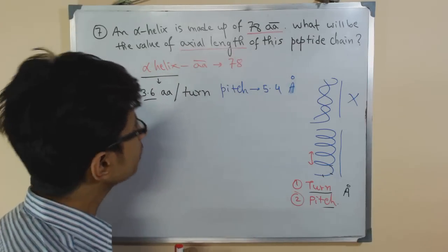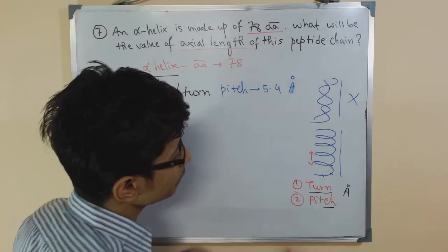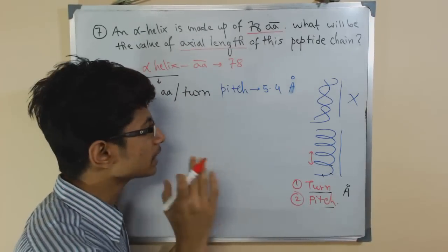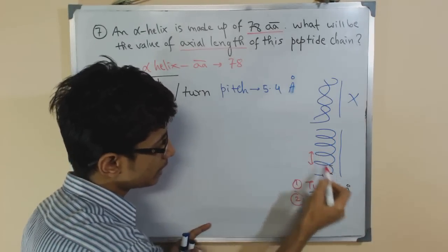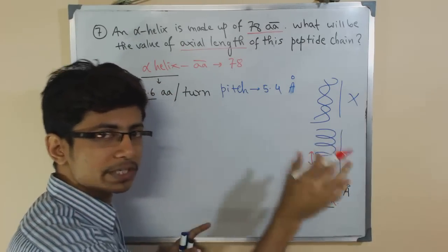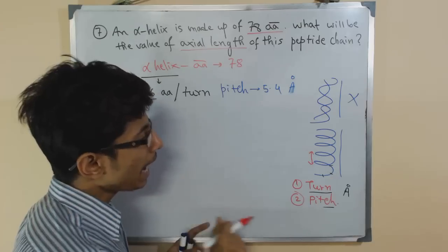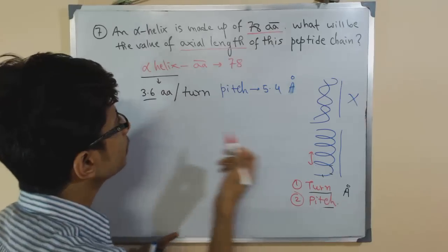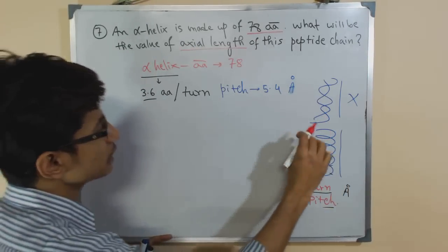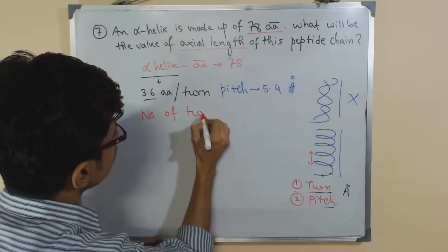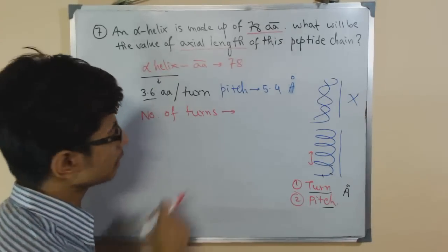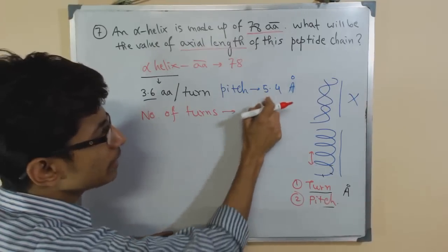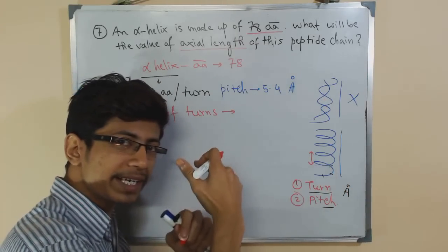The axial length means the total length covered by all 78 amino acids. Since we have 78 amino acids, we need to find the number of turns in this complete structure. Once we know the number of turns, we can multiply by the pitch — because the pitch gives the distance between each pair of turns — to get the total axial length.